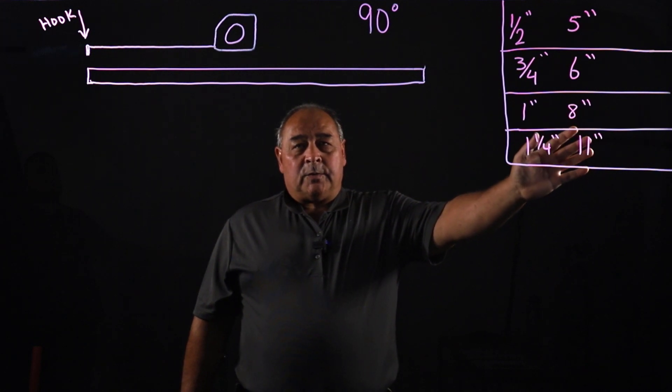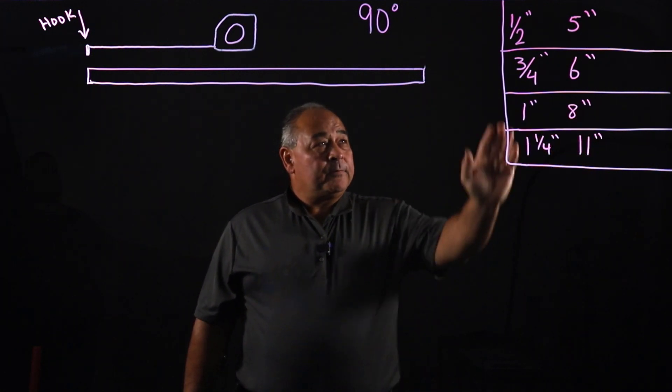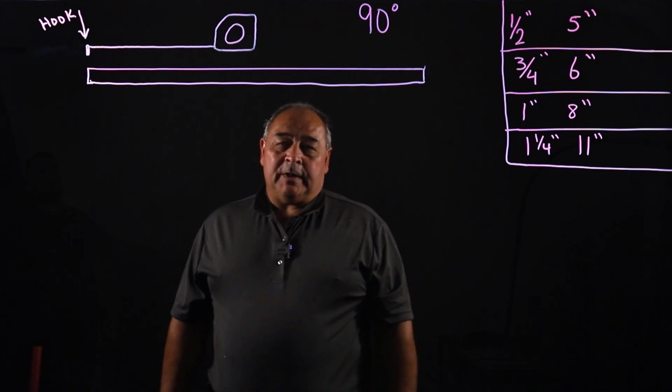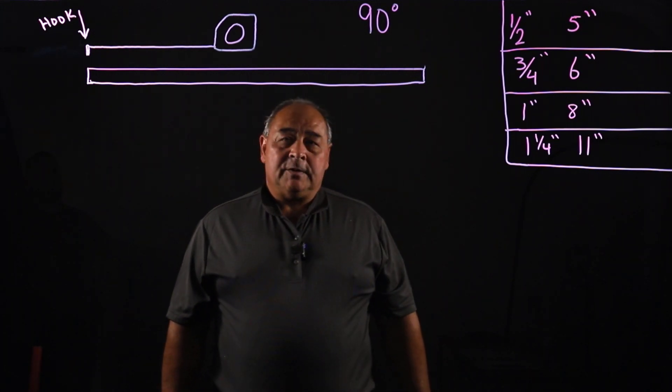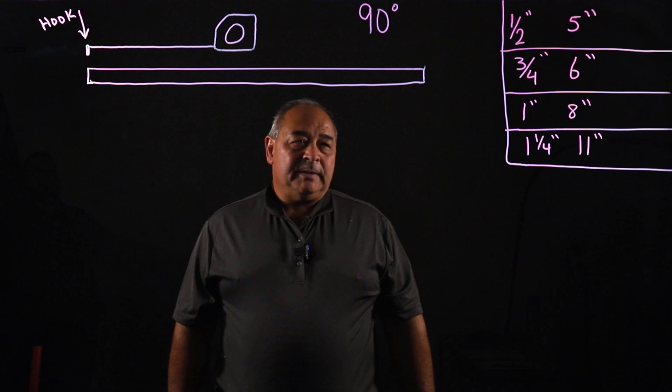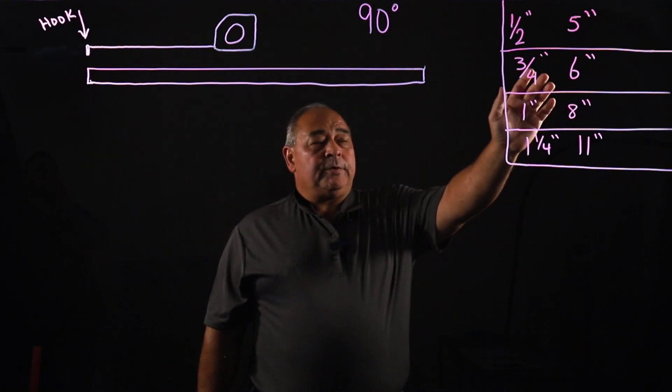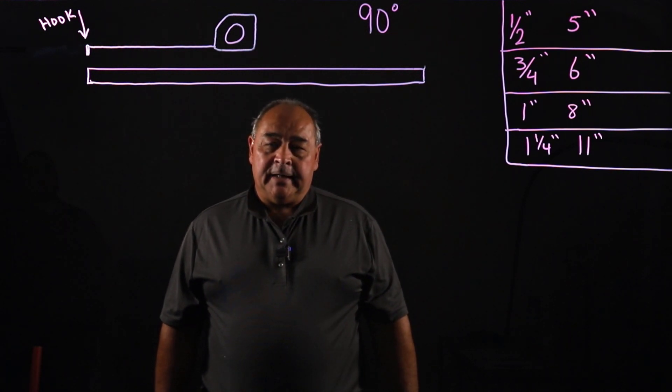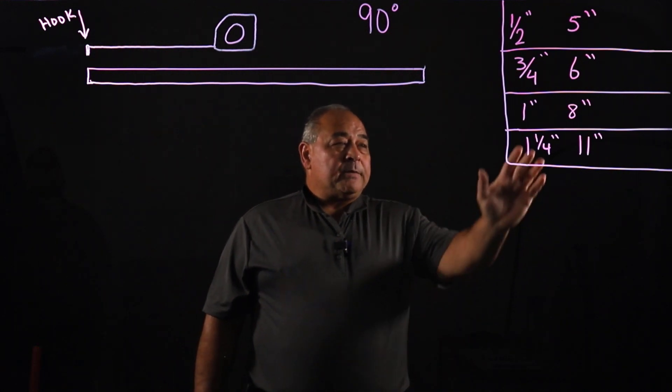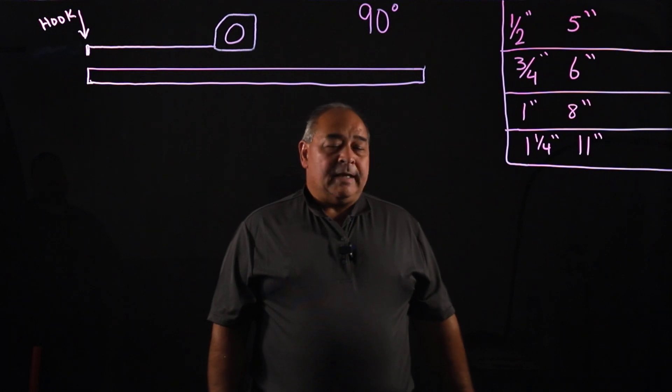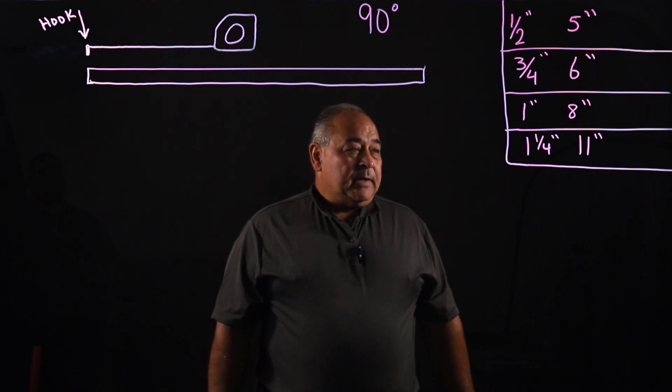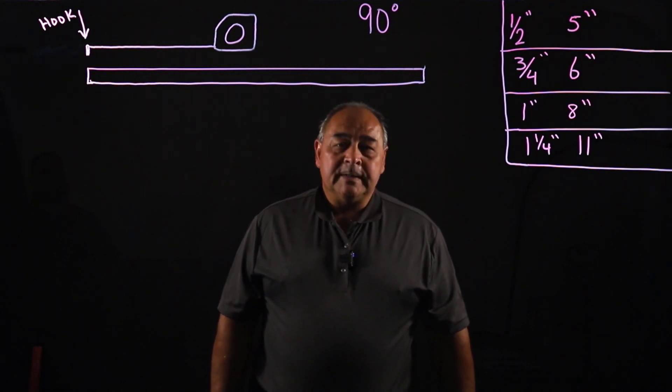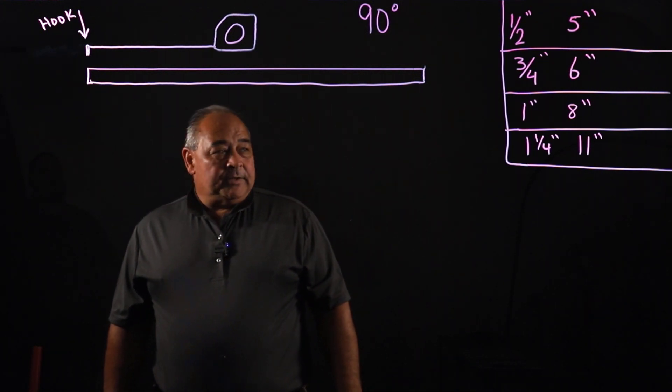The common deductions for hand bending, for half-inch, we've got a five-inch deduction. With Amtech, we rarely deal with half-inch unless we do some specialty control type work. Most of this is going to be referring to three-quarter inch, which is a six-inch deduction for a 90. Sometimes we're dealing with one inch, and it's an eight-inch deduction. Then for some larger conduit, EMT, we might be dealing with inch and a quarter, and that'd be an 11-inch deduction.